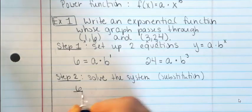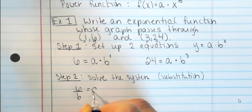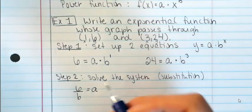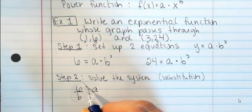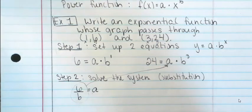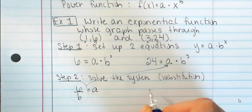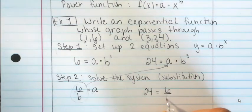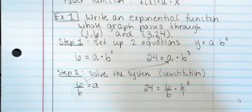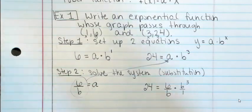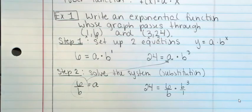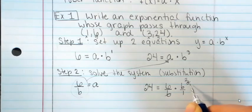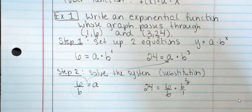Solving the first equation for a: a equals 6 divided by b to the first power. Now I'll take that value for a and plug it into the other equation. So I have: 24 equals (6 over b) times b cubed. Writing that over 1 so I realize I'm multiplying straight across — I can look for common factors in numerator and denominator. This becomes b squared, since b cubed over b to the first means I subtract exponents with like bases. So I get b squared in the numerator.